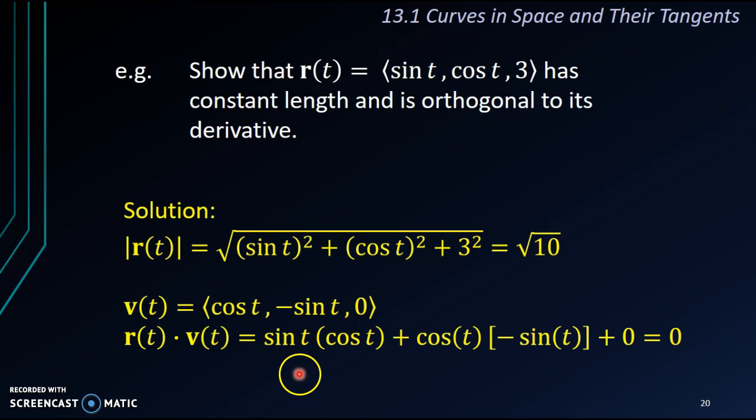Let's find the dot product. r(t) dot with v, we get sin t by cos t plus negative cos t sin t plus 3 by 0, that is 0. As we can see from here, these two terms will cancel each other. Plus 0, you get 0. When we get 0 for the dot product between these two vectors, it means these two vectors are orthogonal to each other.